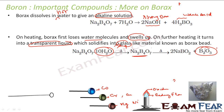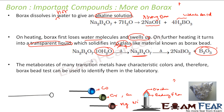This transparent bead, when mixed with some element and heated, gives different colors. These transition metals have special colors. For example, cobalt gives blue, chromium and copper give green, and manganese and nickel give brown in the oxidizing flame. These colors are used to identify the metals in the lab, and this test is called the Borax bead test.